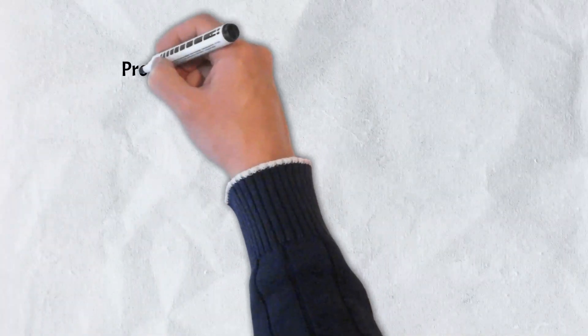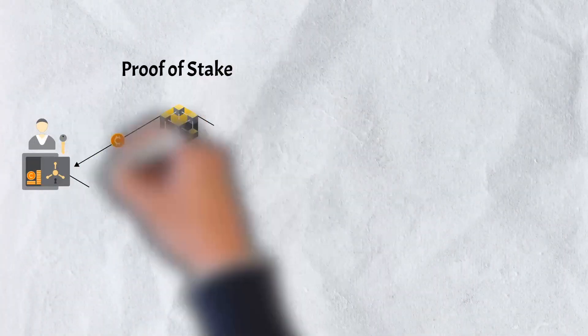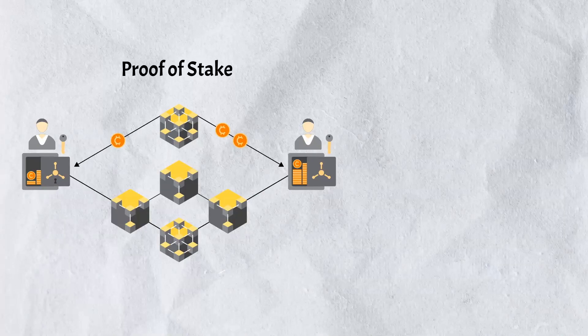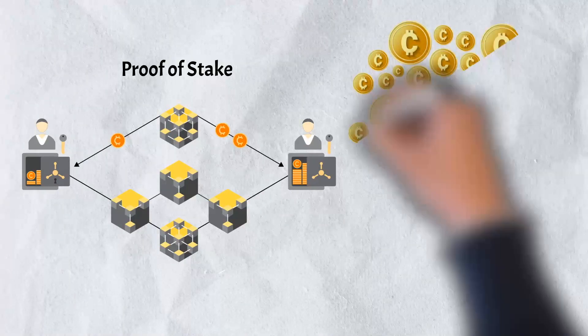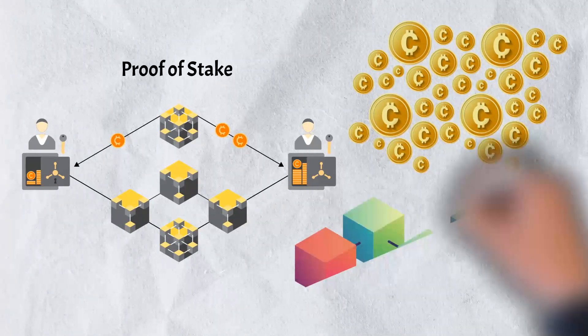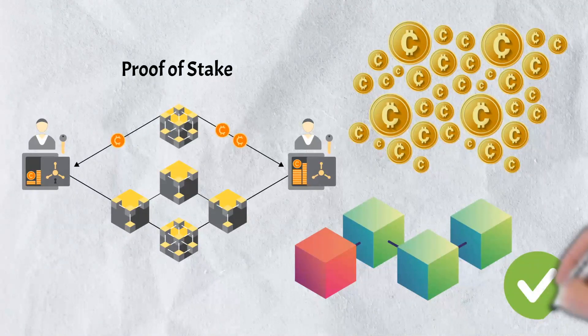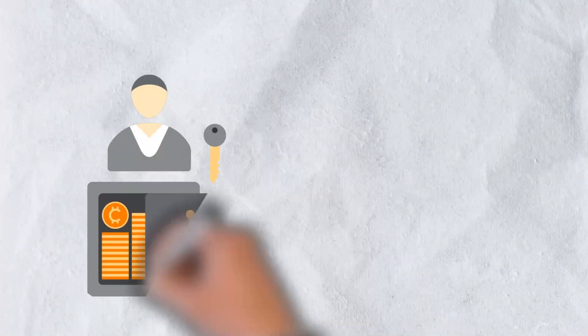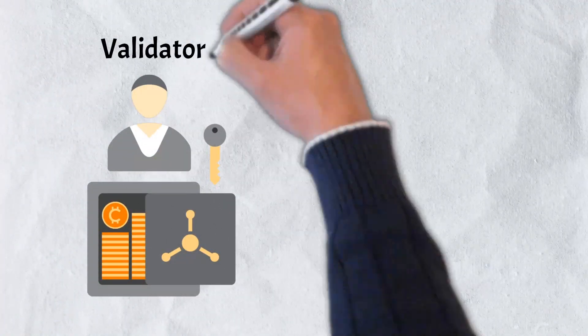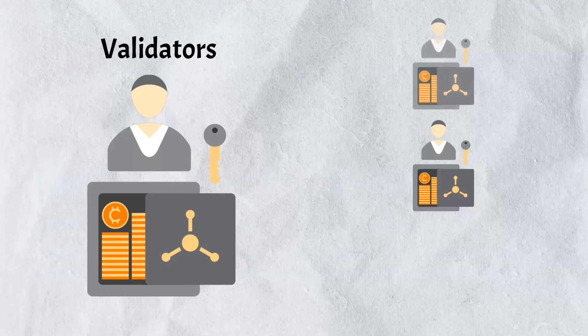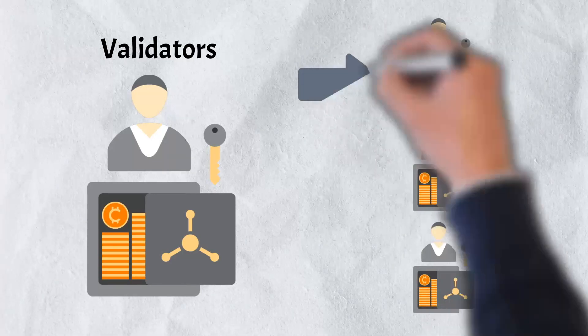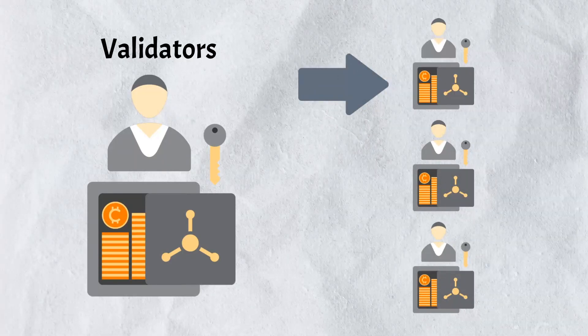Proof-of-stake seeks to reduce the amount of computational power needed in order to verify transactions. With proof-of-stake, coin owners offer their coins as collateral for a chance to verify transactions and validate blocks. These coin stakers are known as validators. The block is then mined, or validated, by validators who are chosen at random, rather than employing a competition-based process like proof-of-work.